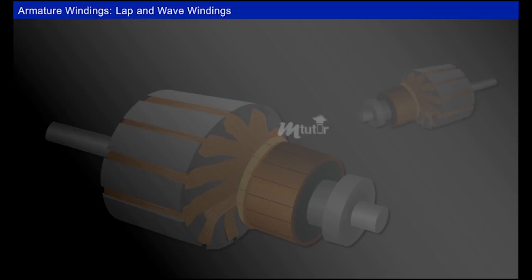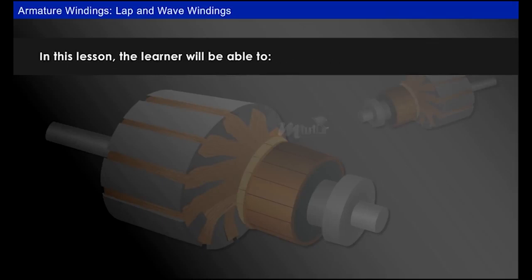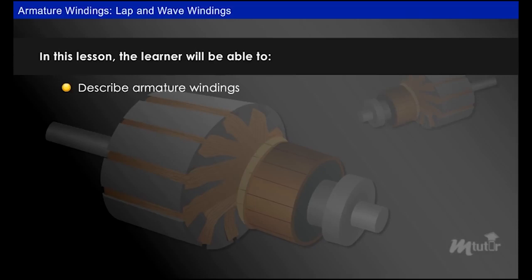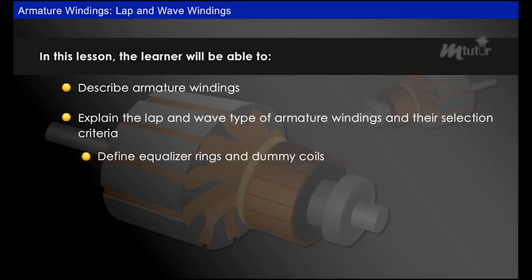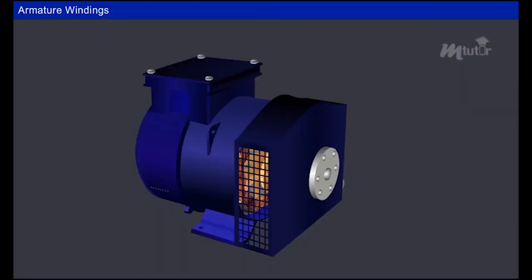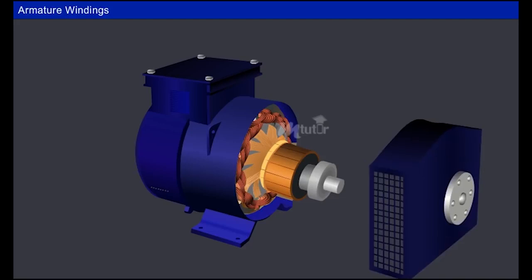Armature windings — lap and wave windings. In this lesson, the learner will be able to describe armature windings, explain the lap and wave type of armature windings and their selection criteria, and define equalizer rings and dummy coils.